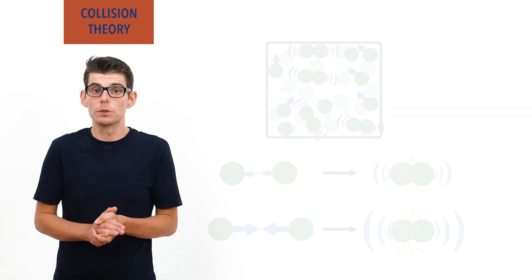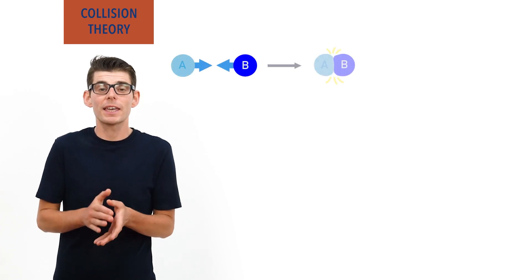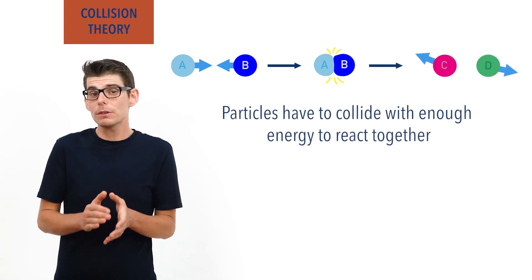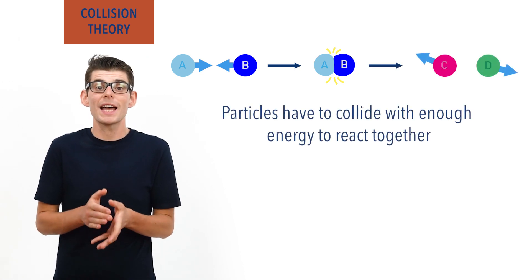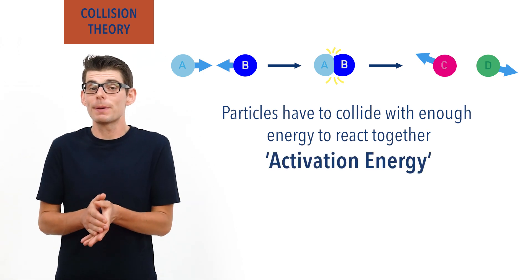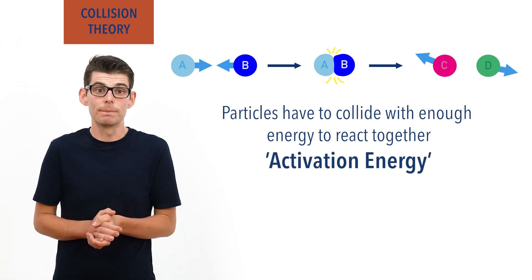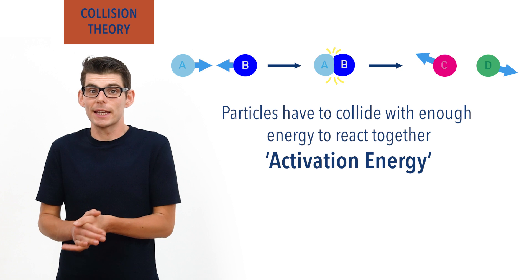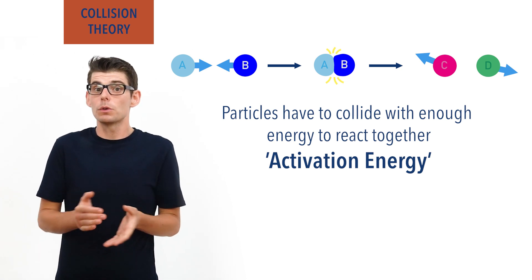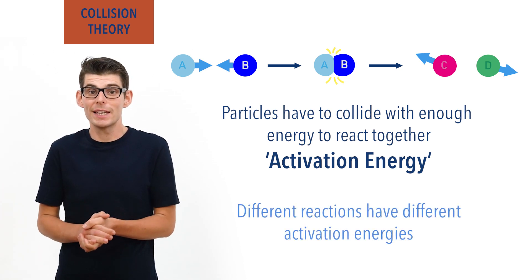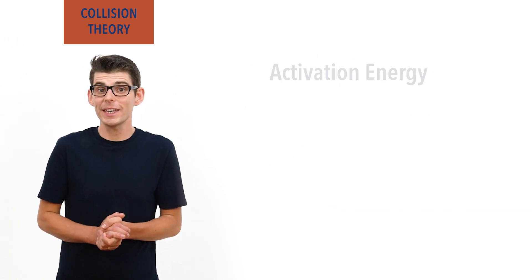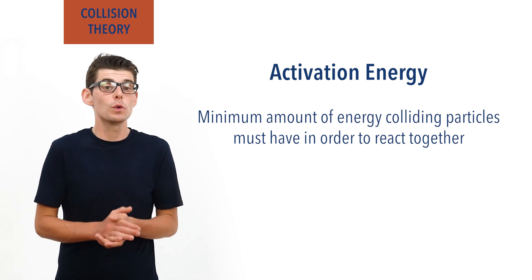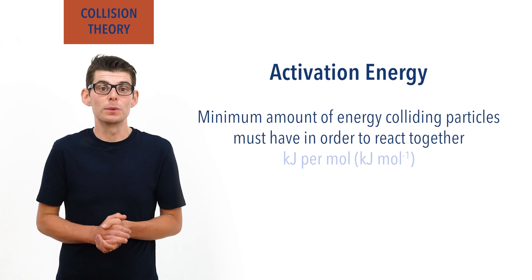For certain particles, if they collide together with enough energy, a chemical reaction can occur and new products can form. The amount of energy needed for this to happen is called activation energy, and is different depending on the particles colliding, meaning different particles have to collide with different amounts of energy in order to react together. As a result, different reactions have different activation energies. Activation energy can be defined as the minimum amount of energy that colliding particles must have in order to react, and is measured in kilojoules per mole.